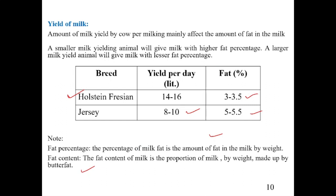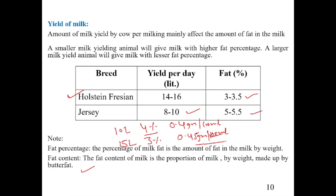To illustrate: a breed giving 10 liters of milk per day at 4% fat has a fat content of 400 grams per day. Another breed giving 15 liters per day at 3% fat has a fat content of 450 grams per day — a higher fat content despite a lower fat percentage. So the high-yielding animal can have a higher fat content even with a lower fat percentage.